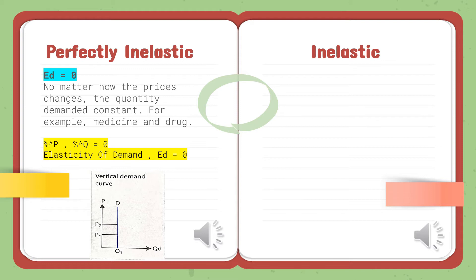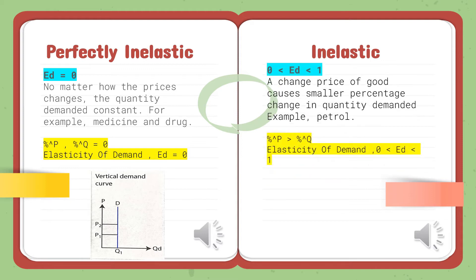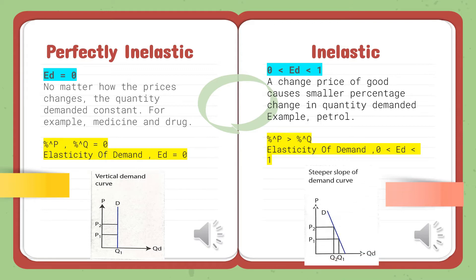For Inelastic demand, a change in price causes a smaller percentage change in quantity demanded. For example, an increase in the price of petrol will lead to only a small decrease in quantity demanded. The value of Price Elasticity of Demand is between zero and one.